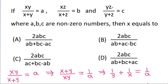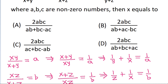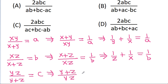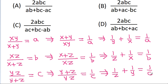And we have yz by y plus z is equal to c, and this implies y plus z by yz is equal to 1 by c, and simplifying y by yz is 1 by z plus z by yz is 1 by y is equal to 1 by c. Suppose this is equation 1, this is equation 2, and this is equation 3.